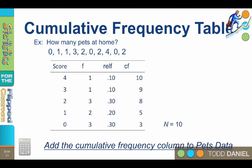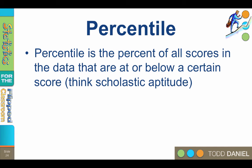We are going to add one last column to our table, and that is percentile. A percentile is the percentage of all of the scores in the data that are at or below a certain score. So perhaps you've taken the scholastic aptitude test, and you scored at the 89th percentile.